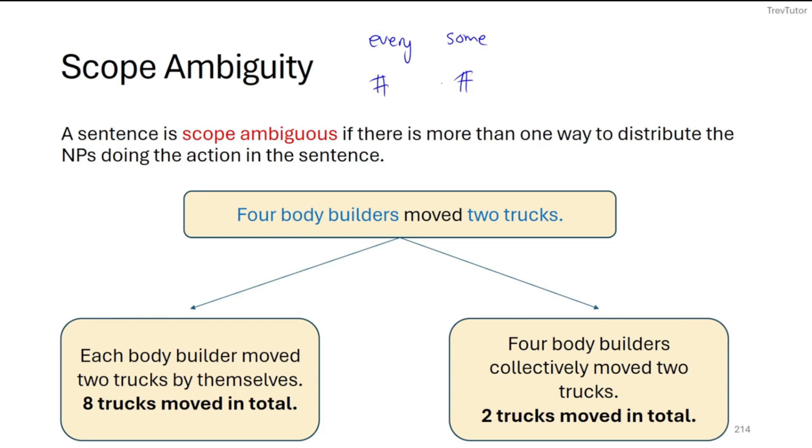And what I mean by this is if we say four bodybuilders move two trucks, there's different ways that we can distribute this. Either there's four bodybuilders, and then each of those bodybuilders individually are going to be moving two different trucks. So that would look like the diagram on the left. So each bodybuilder is connected to two trucks, which means that there's going to be eight trucks moved in total.